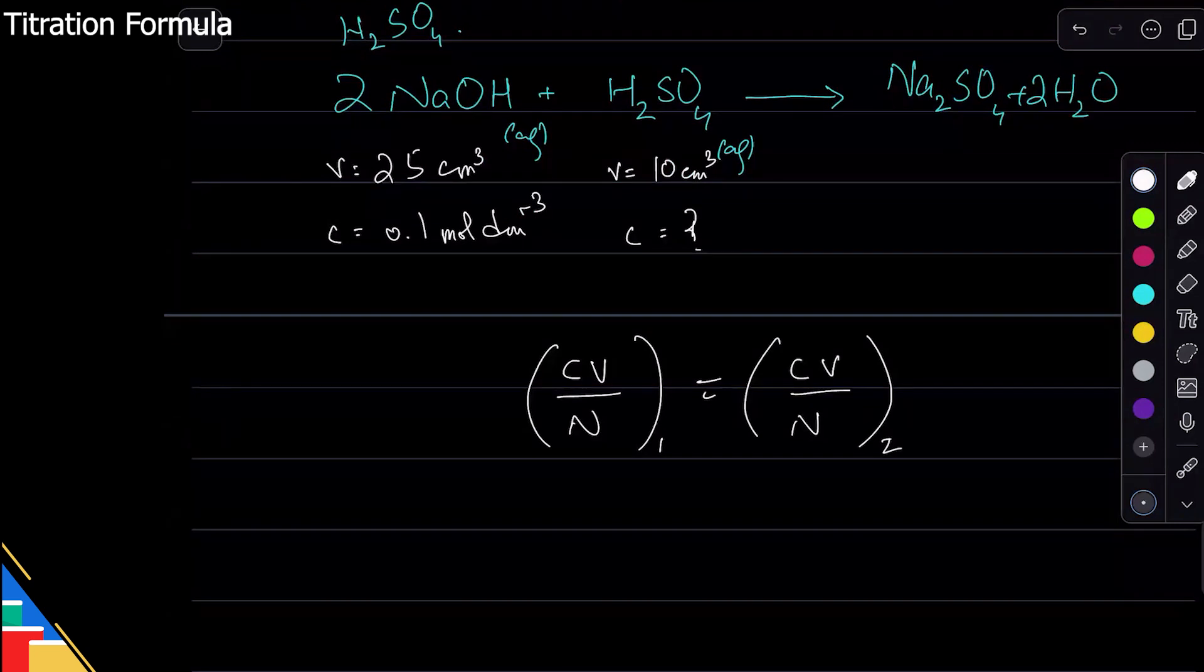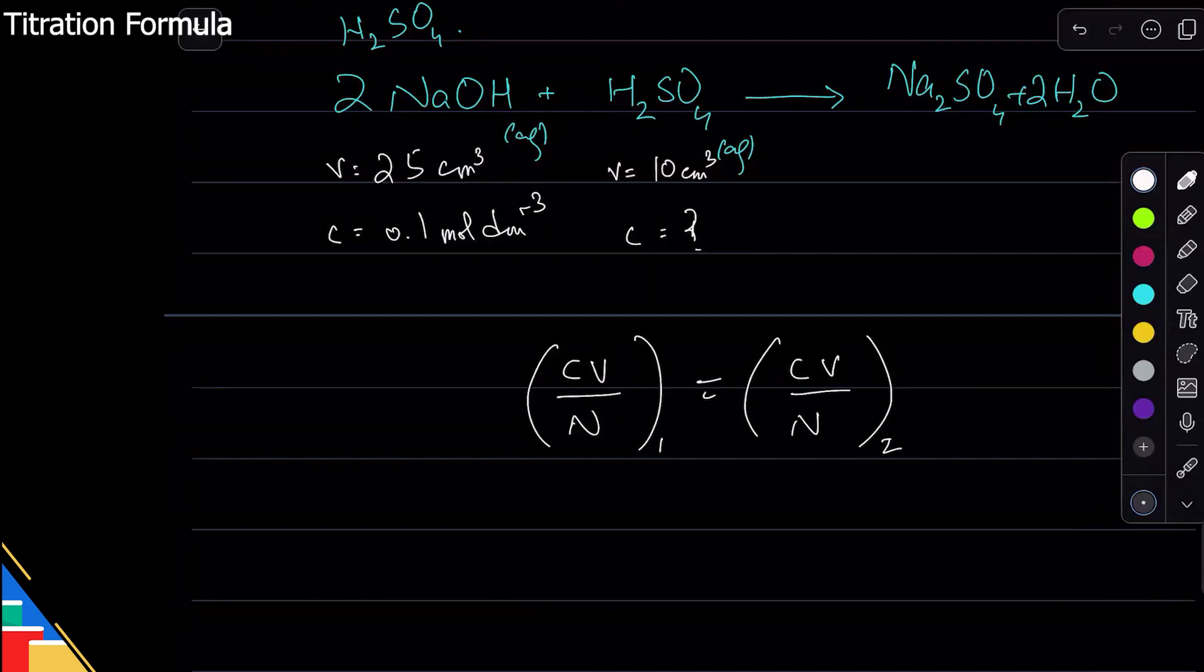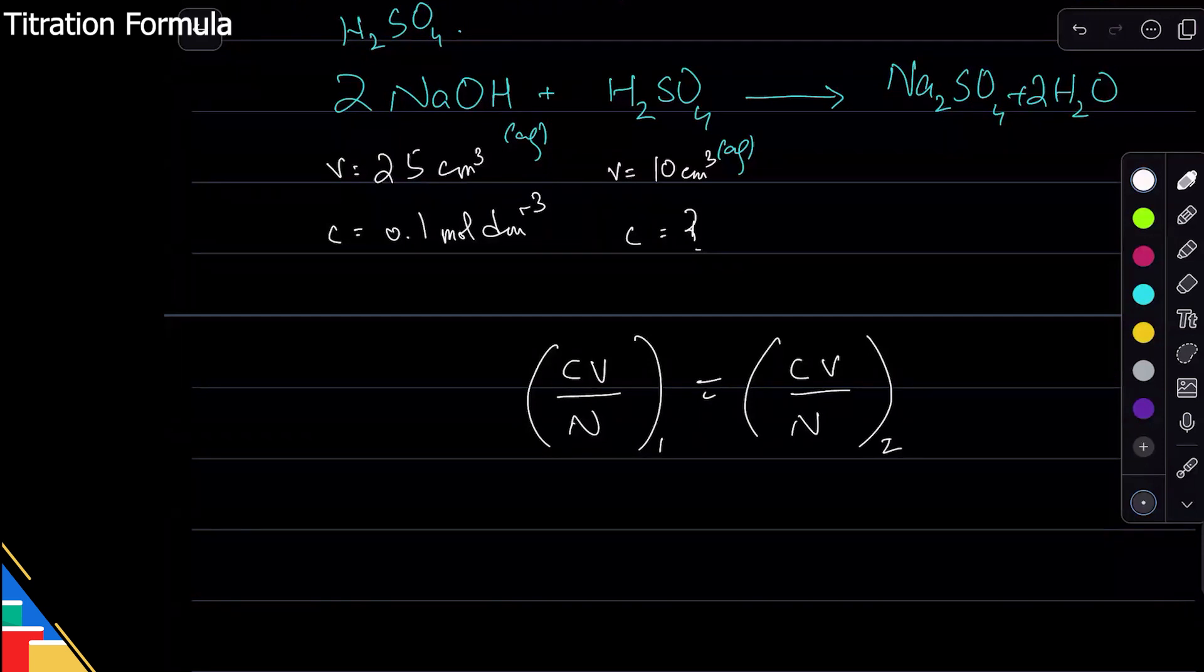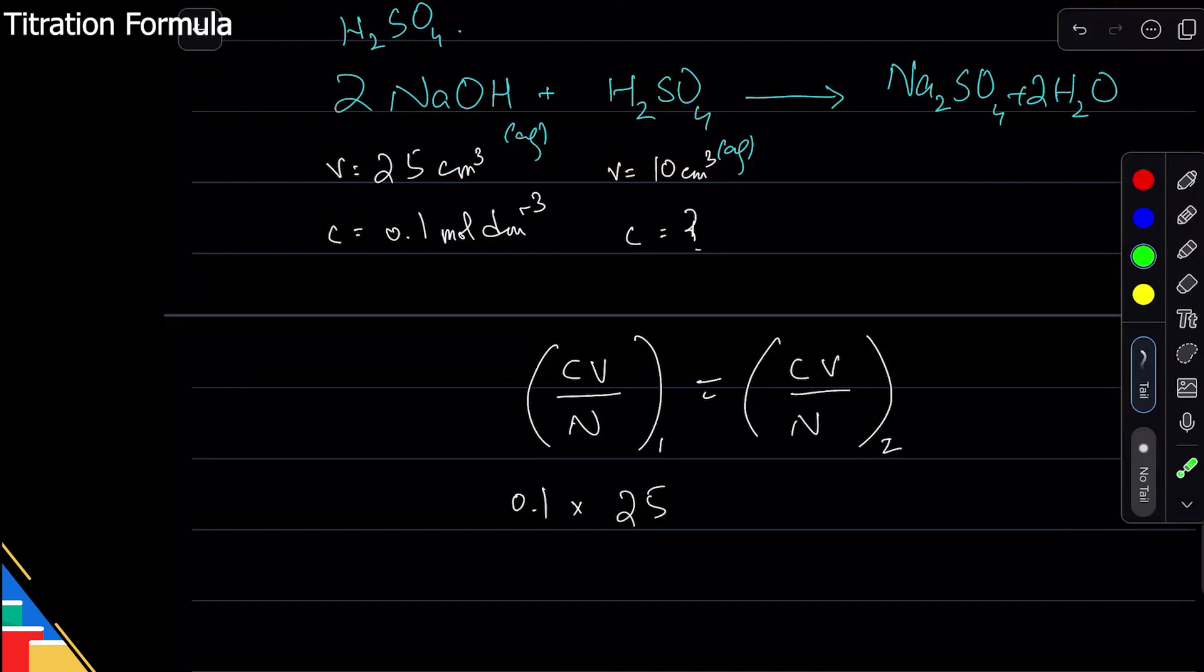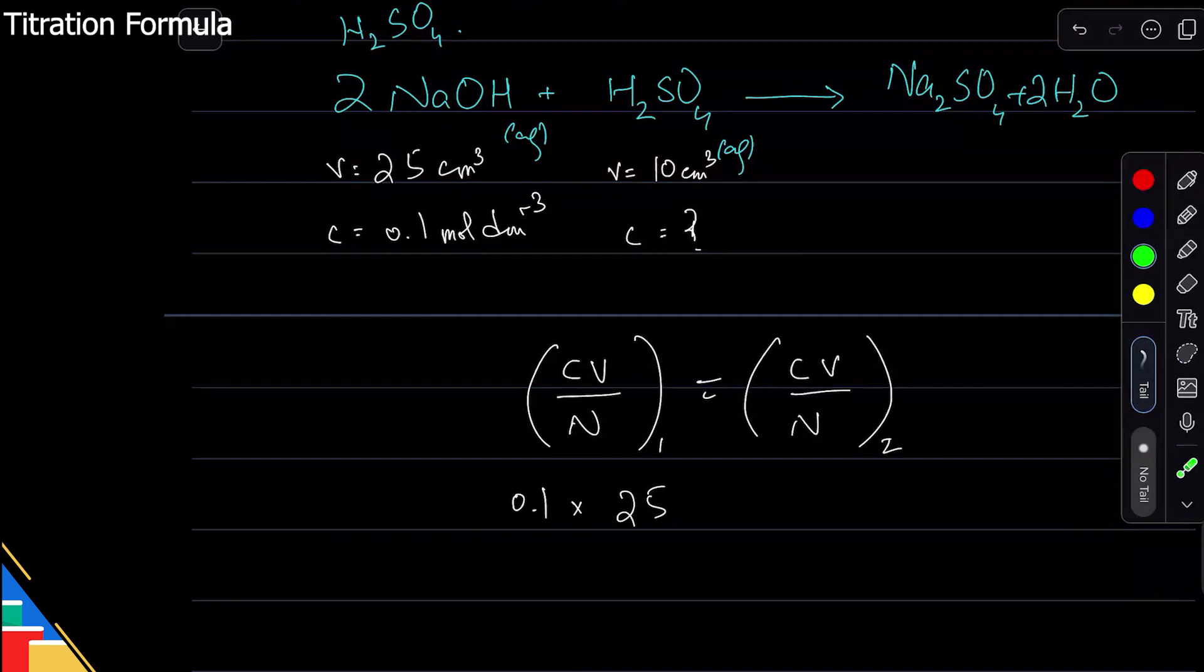What is the concentration? 0.1. Where's volume? 25. The good part about titration formula is that you don't need to convert this to dm³. You absolutely don't need to. If you were doing stoichiometry the way we studied earlier, you would have to convert it to dm³ by dividing by thousand, but because I'm using titration formula I don't need to. What is n? N is the mole ratio from equation, so for sodium hydroxide it will be 2.